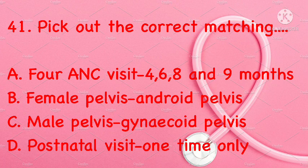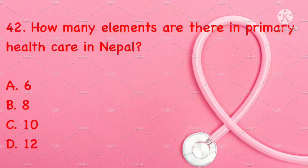Pick out the correct matching: ANC visits at 4, 6, 8, and 9 months; female pelvis is android; male pelvis is gynecoid; or postnatal visit is one time only. Correct answer is A: ANC visits at 4, 6, 8, and 9 months.